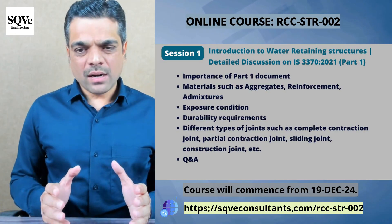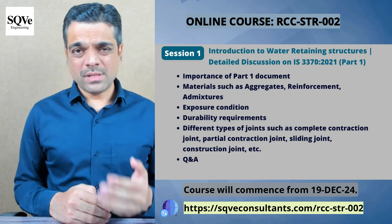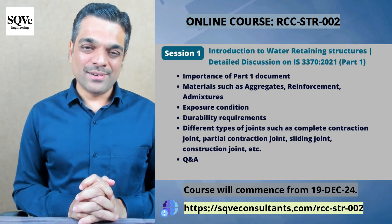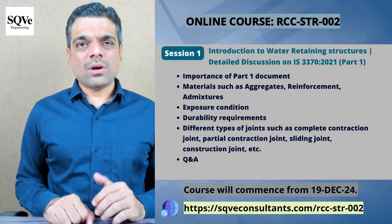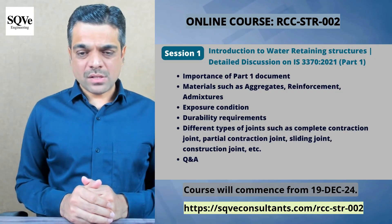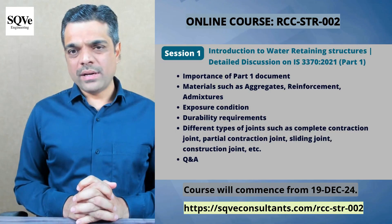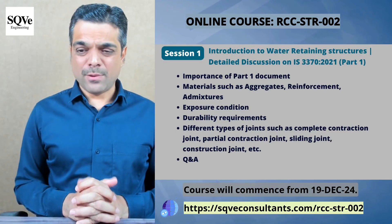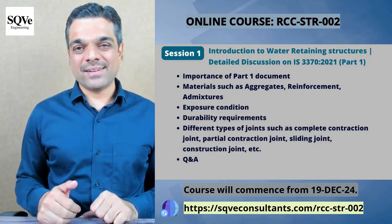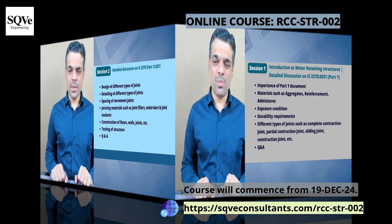We will start with detailed discussions on IS 3370 Part 1, covering its importance for the design of liquid retaining structures, exposure conditions, and durability requirements. We will also talk about different types of joints required in water retaining structures, such as complete contraction joint, partial contraction joint, sliding joint, etc., and discuss each type mentioned in IS 3370 Part 1.